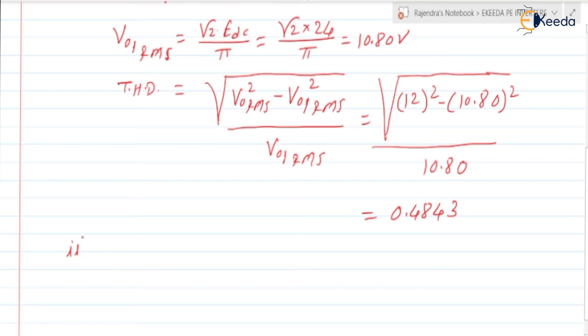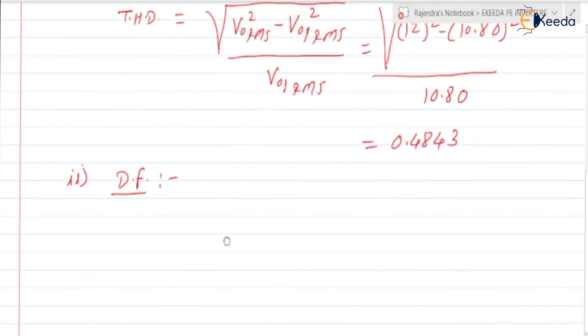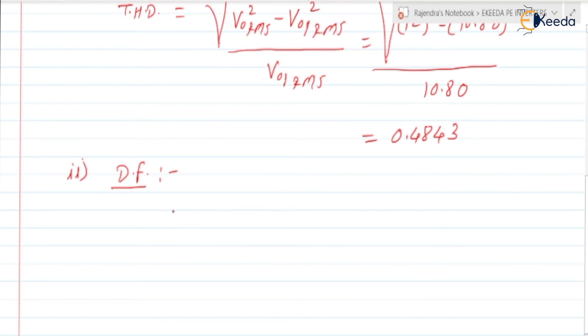In the second bit, they ask for the distortion factor. Second bit is the distortion factor DF. DF is nothing but it is a ratio of V01RMS divided by V0RMS. What is the V01RMS? It is 10.8 divided by V0RMS is 12. So we can find it as 10.8 divided by 12, so it is 0.9 or it is 90 percent we can write.